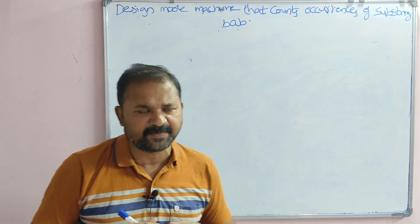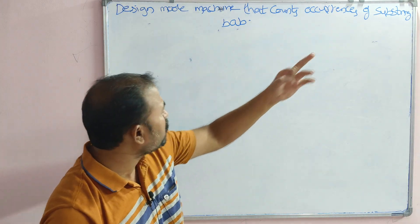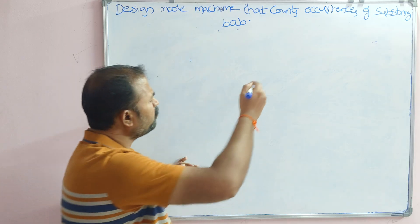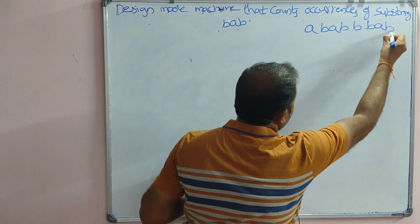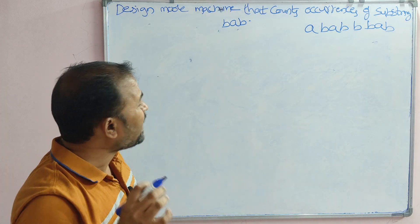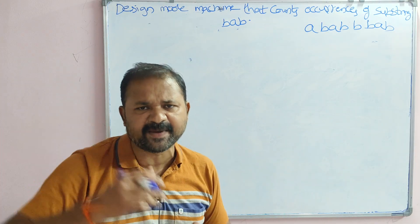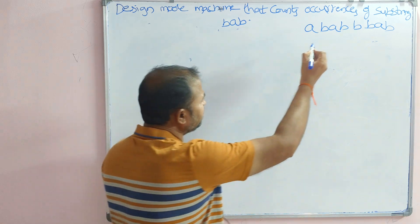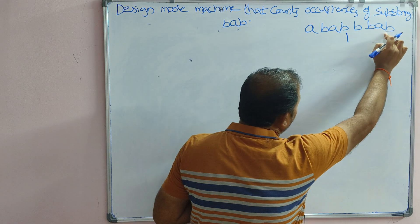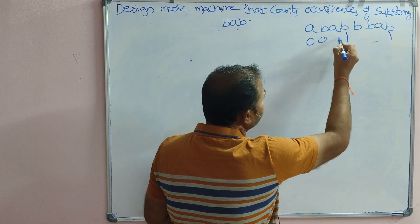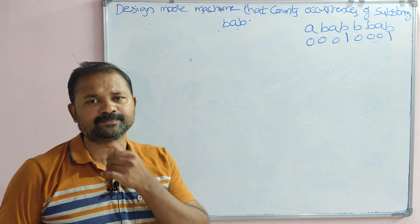Let's design a Moore machine that counts occurrences of the substring BAB. We have a mainstream like ABABBBAB, and we have to count occurrences of BAB. If BAB is present, the output is 1; otherwise 0. Here we have BAB at one position (output 1) and BAB at another position (output 1), so 1 plus 1 equals 2 — the substring BAB is present in the mainstream twice.